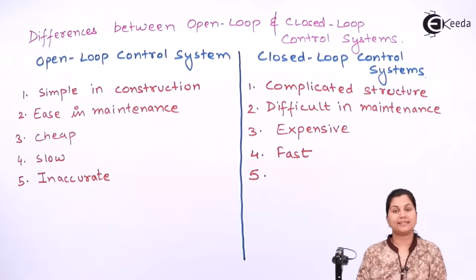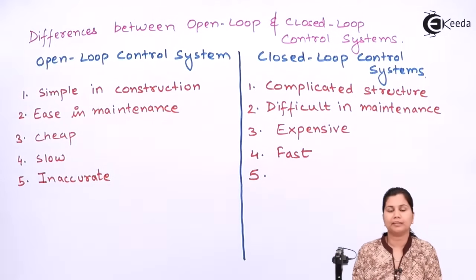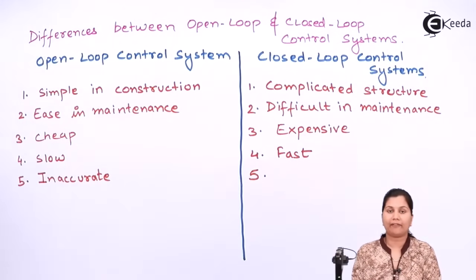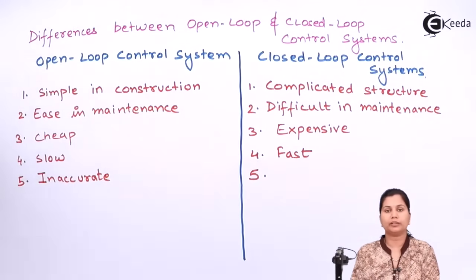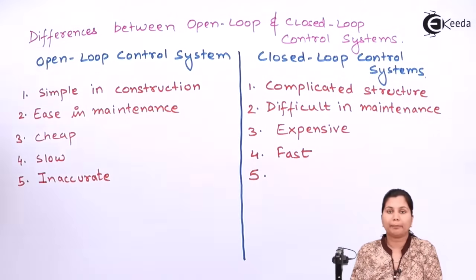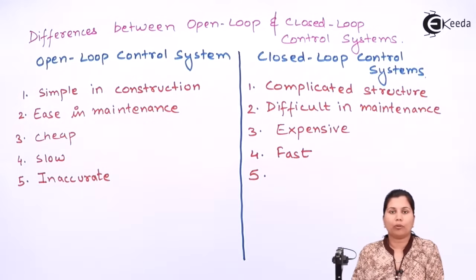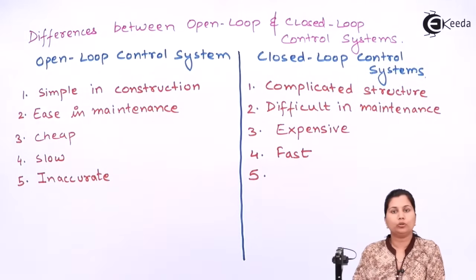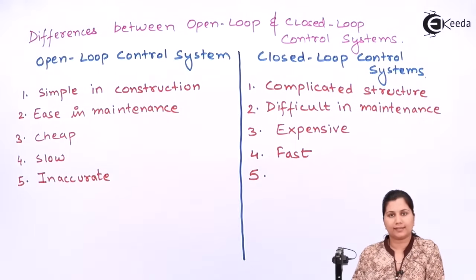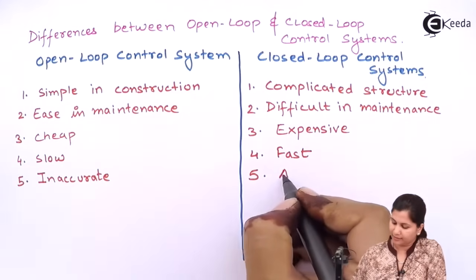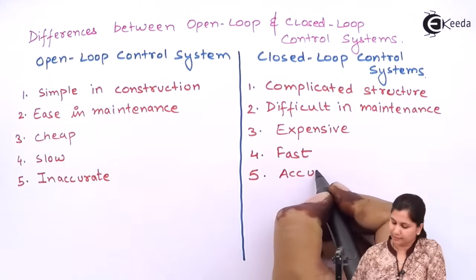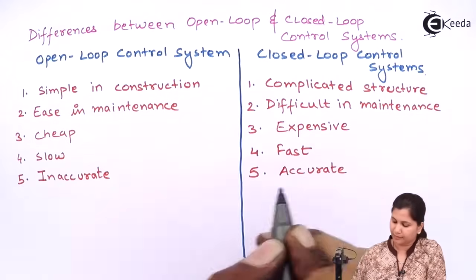Whereas the closed loop control system has feedback elements and the output is compared with the input, so the results will be more accurate in comparison to the open loop control systems — so they are accurate.